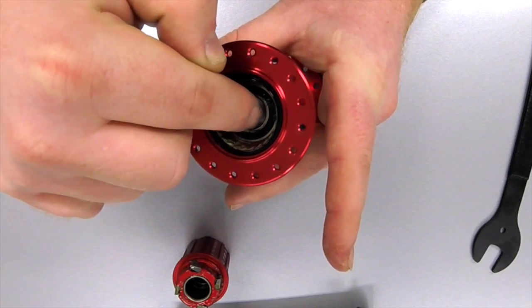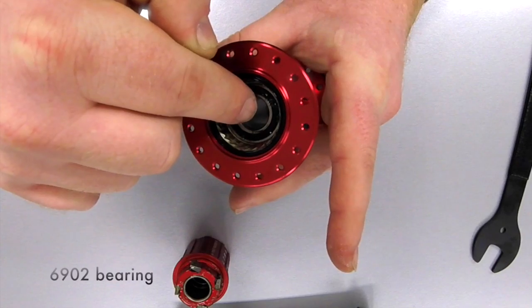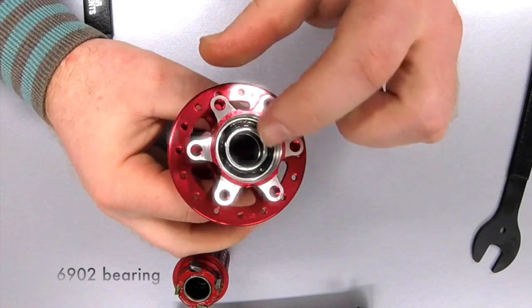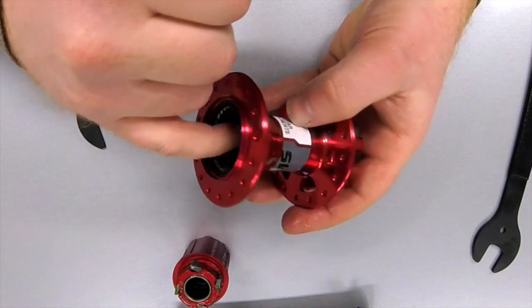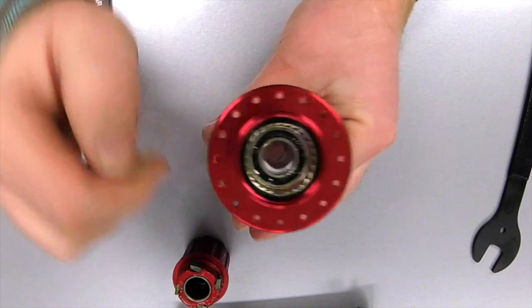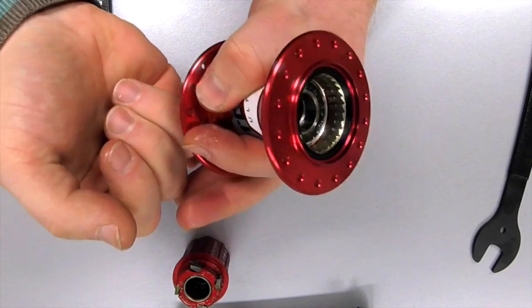Inside the main body you have another 6902 seal bearing made by SKF and a spacer and the same on the other side. To remove these just push the spacer to one side and just use a drift to knock the bearing out and press a replacement one back in.